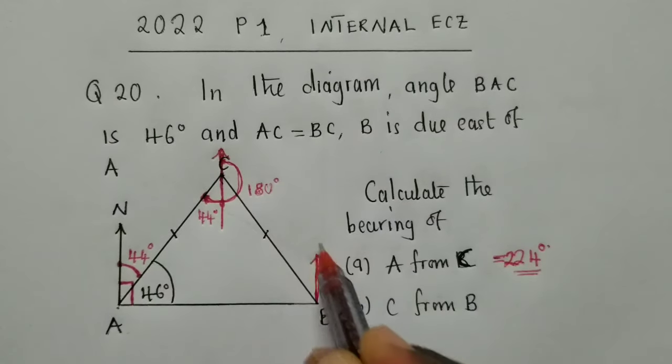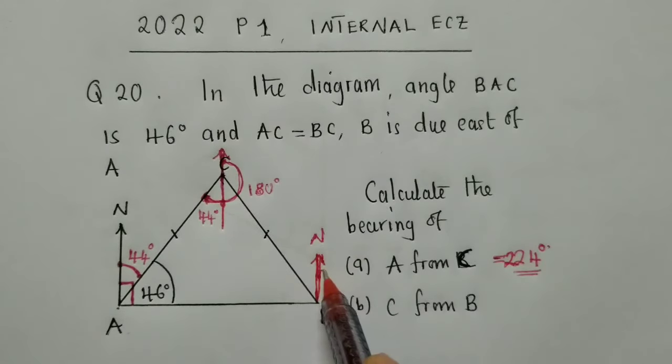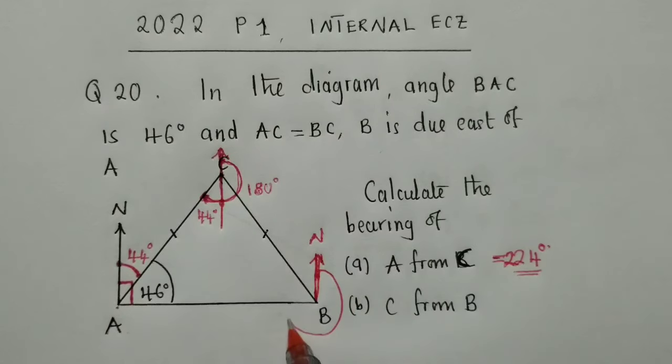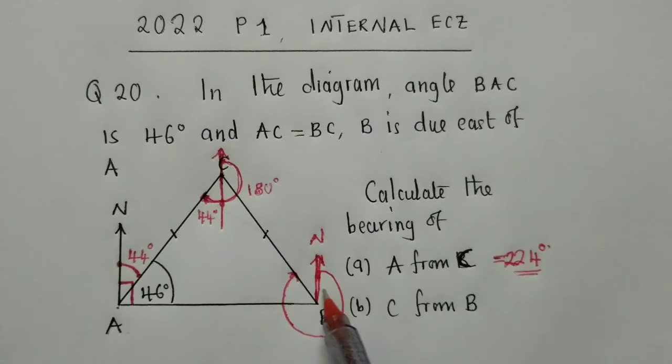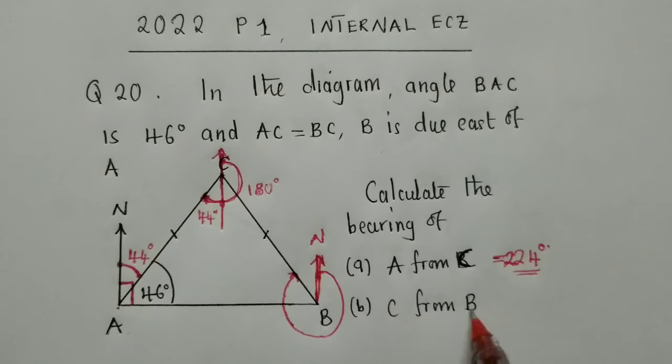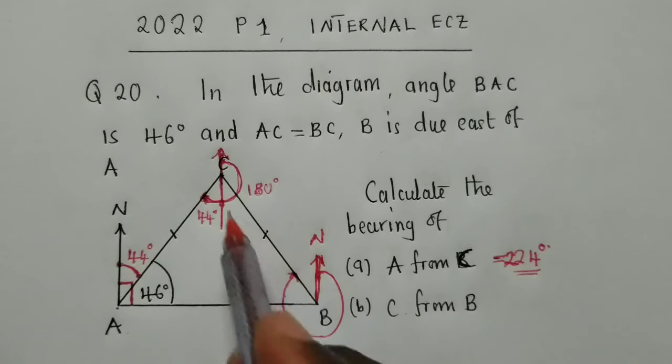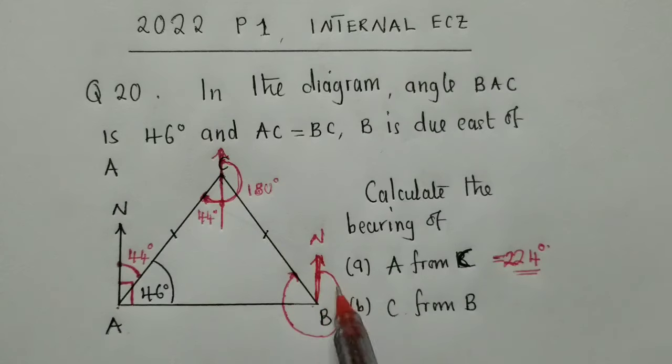This is what we're going to do. We do our north here. This is very important, north. And we start moving like this up until we touch the line that is joining the two points. Remember, with bearings, we go to the right-hand side. And then, up until we touch the line that is joining the two letters that have been mentioned. So, C is right here and B is here. So, this is the bearing that we are looking for.